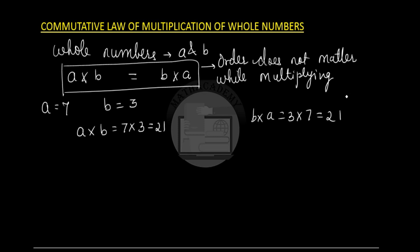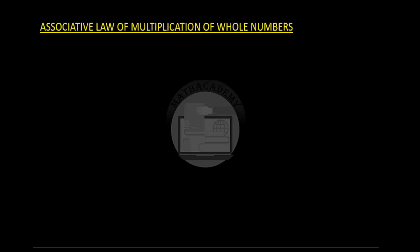The next property is the associative property. We learned the same property for addition and now we will see how it works for multiplication. The property says that if you have three whole numbers a, b, and c, and you find the product of a and b first, then multiply that product by c,